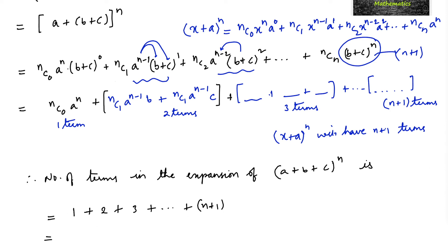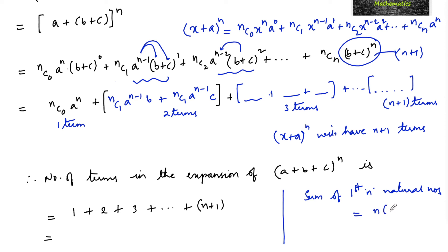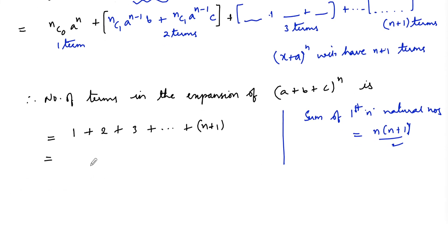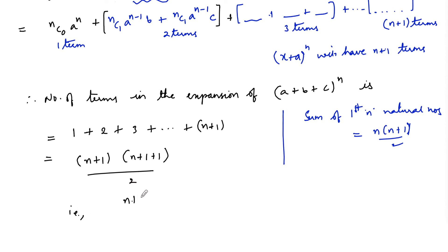Since the sum of first n natural numbers is n(n+1)/2, the sum of the first n+1 natural numbers is (n+1)(n+1+1)/2, which equals (n+1)(n+2)/2. Therefore, the number of terms in the expansion of (a + b + c)^n is (n+1)(n+2)/2.